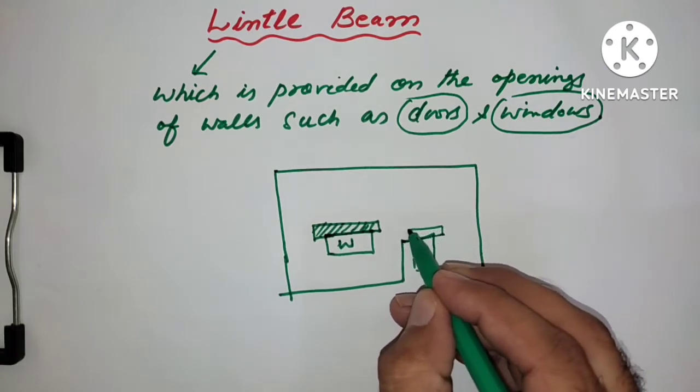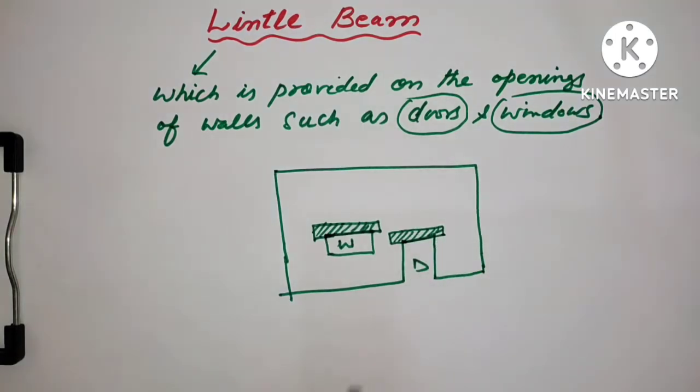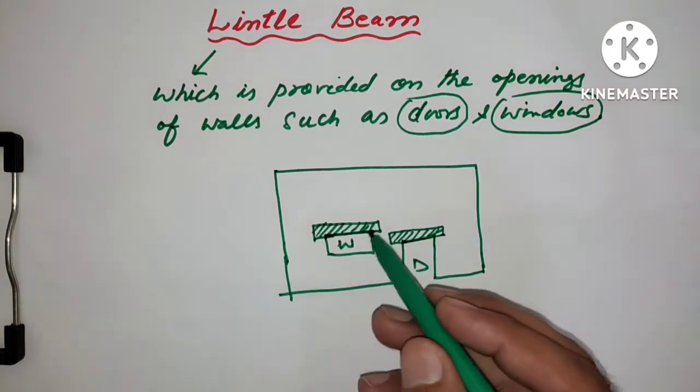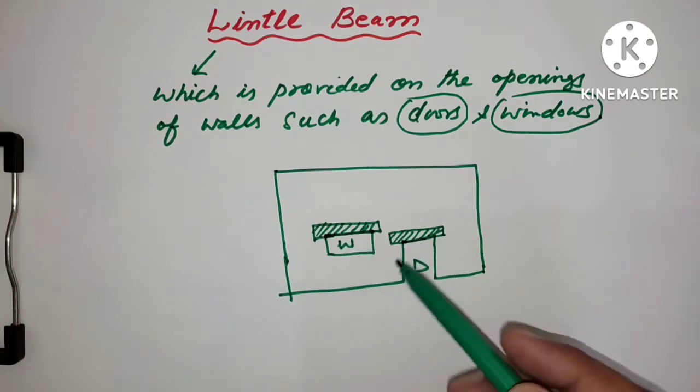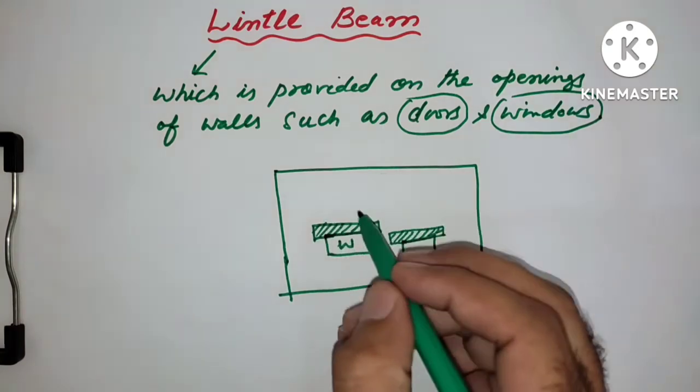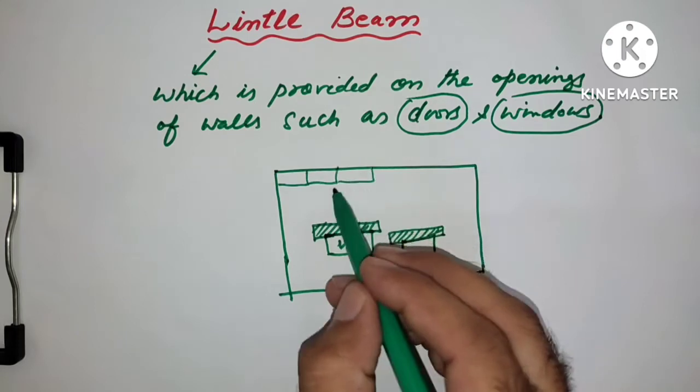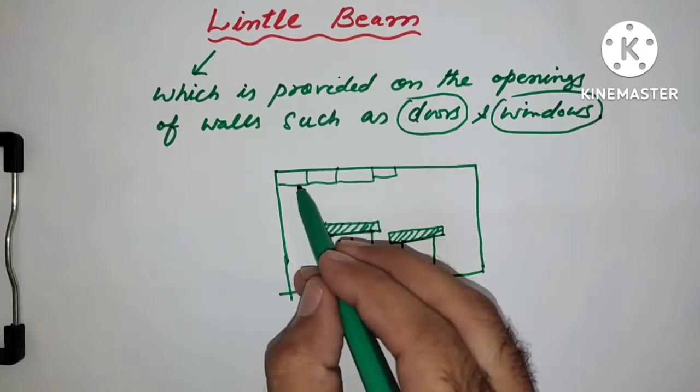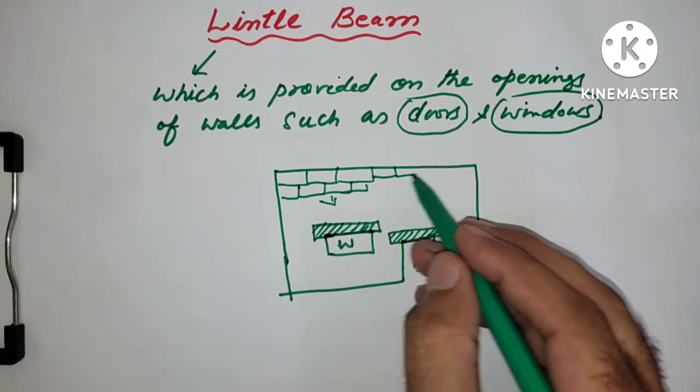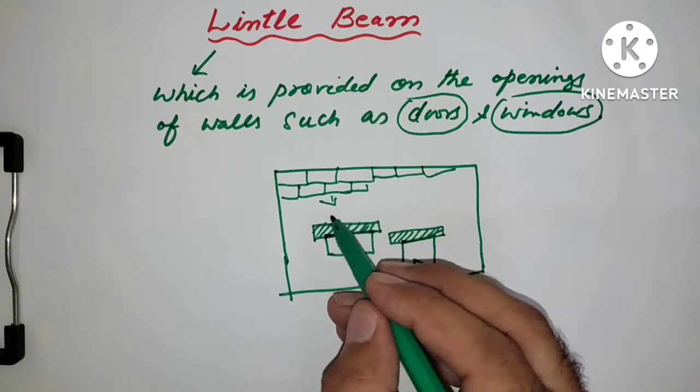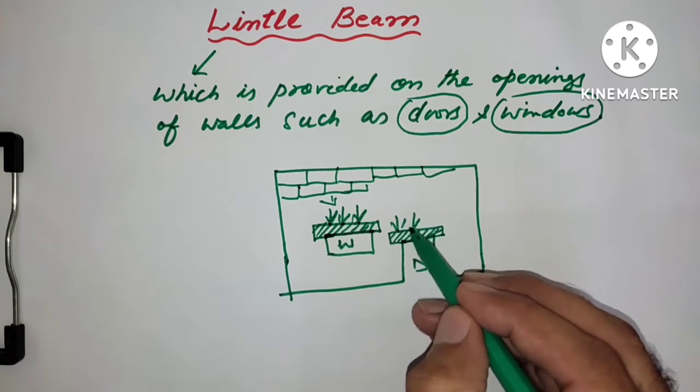We will provide lintel. So the question arises, why we need lintel above the door and windows? Because this is the wall, and above the window opening there is brickwork or blockwork. This load is coming on the window and also load is coming on the door opening.